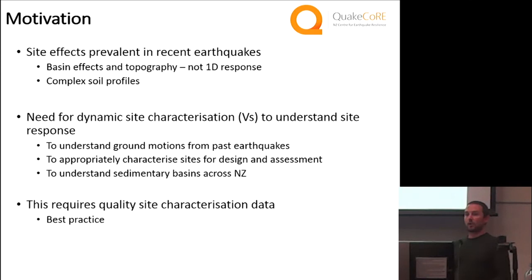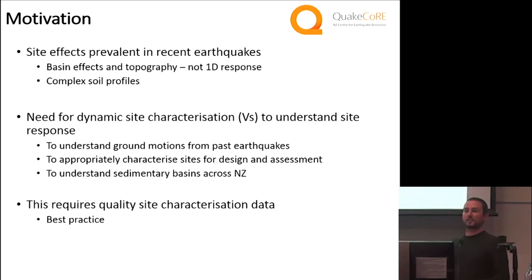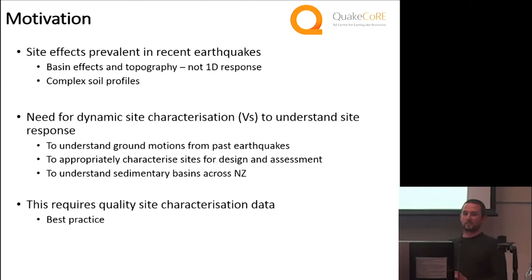The motivation behind this talk is that we've had a lot of earthquakes recently, and those earthquakes have really highlighted the impact of site effects. Canterbury and Wellington in the last few years — you've got basin effects, basin edge effects, and also topographic effects — none of that is really 1D response, which is interesting when we come back to classifying a site. If 1D response doesn't dominate, how do we classify a site?